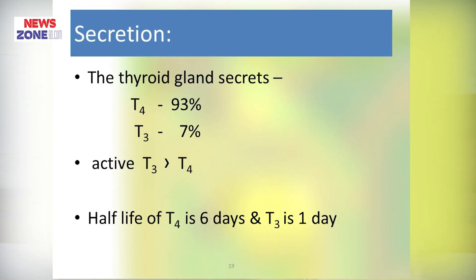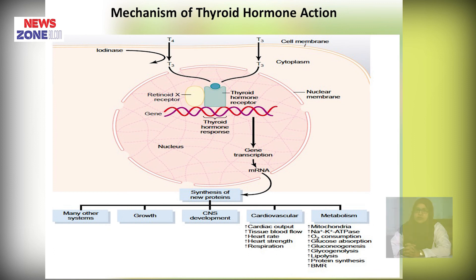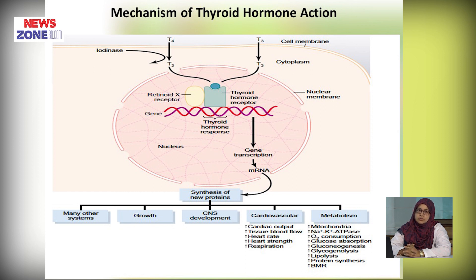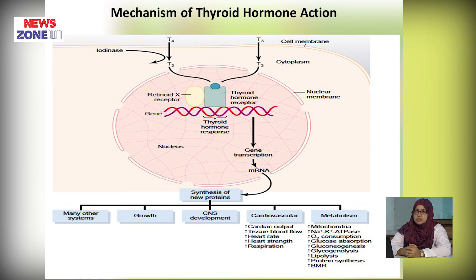The thyroid gland secretes 93% T4 and only 7% T3. T3 is more active than T4, and the half-life of T4 is 6 days while T3 is 1 day. Regarding mechanism of thyroid hormone action: thyroid hormone has receptors in the nucleus. As a lipid-soluble hormone, it easily diffuses through the cellular membrane into the cytoplasm, then enters the nucleus, binds with receptors at a DNA-specific site, forming a hormone-receptor complex that causes genetic transcription and formation of messenger RNA. The mRNA enters the cytoplasm and forms new proteins by translation, which then exert cellular effects.